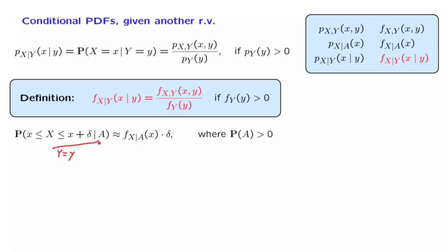But as we said, this is problematic because this event does not have positive probability. So instead, we can take A to be the event that Y is approximately equal to a certain value — that is, a small interval around little y — which in general would be an event of positive probability. And we can try to have a similar interpretation.